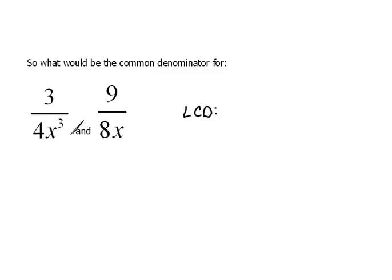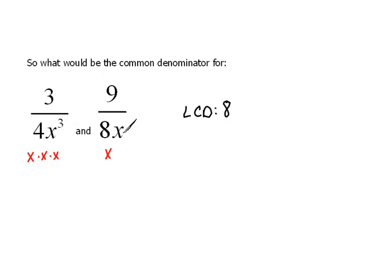Let's look at the number parts first. We have a 4 and an 8 — the smallest common multiple would be 8. Now for the letter parts: x cubed is really x times x times x, and x to the first power is just x. We need the smallest multiple that both will go into. With variables, we just take the highest power of the variable, because we can change x into x cubed by multiplying by something. Therefore, our least common denominator here would be 8x cubed.